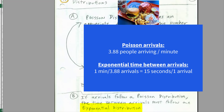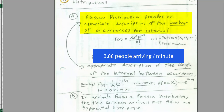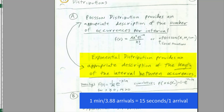If we want to switch to exponential, we take the inverse of the Poisson rate. For our Dick's Hamburger restaurant, that means we'd have 15 seconds between each arrival as our average arrival time. Poisson distribution describes number of occurrences per interval — 3.88 people arriving per minute. Exponential distribution describes the length of the interval between occurrences — an average of 15 seconds between each arrival.